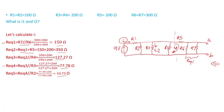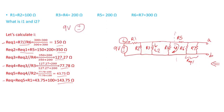R equivalent 5 is in series with R1, so the total equivalent resistance is R equivalent 5 plus R1, which is 143.75 ohms. I've reduced the circuit to just a 9 volt DC source in series with R equivalent of 143.75 ohms.